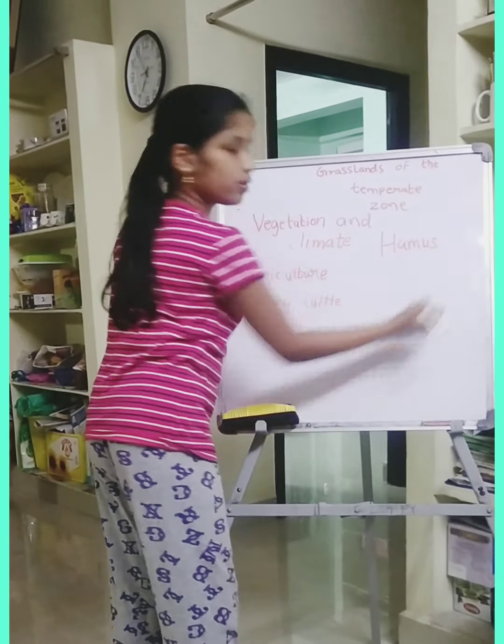The prairies are vast stretches of land with tall grasses. The prairies are green in summer and brown in autumn. The soil there is very fertile because of the large quantities of humus.